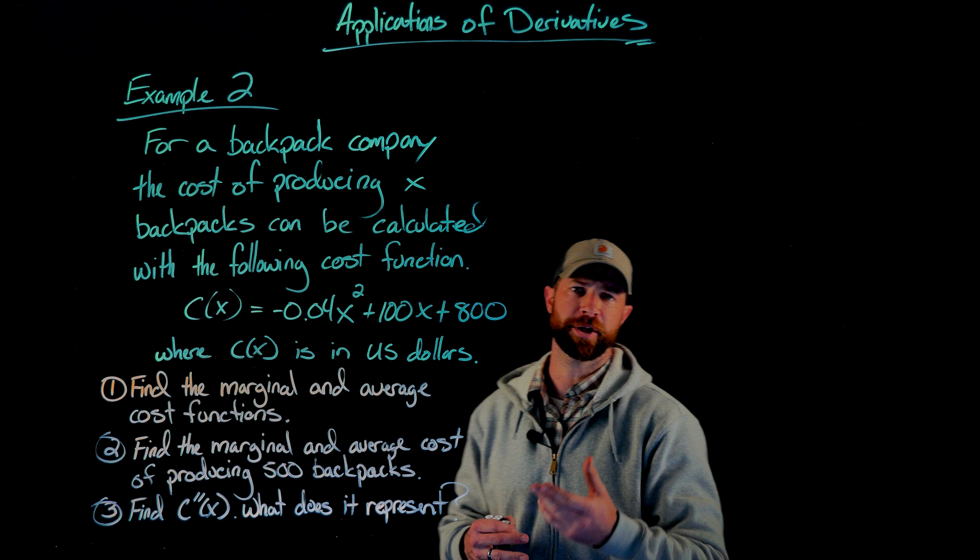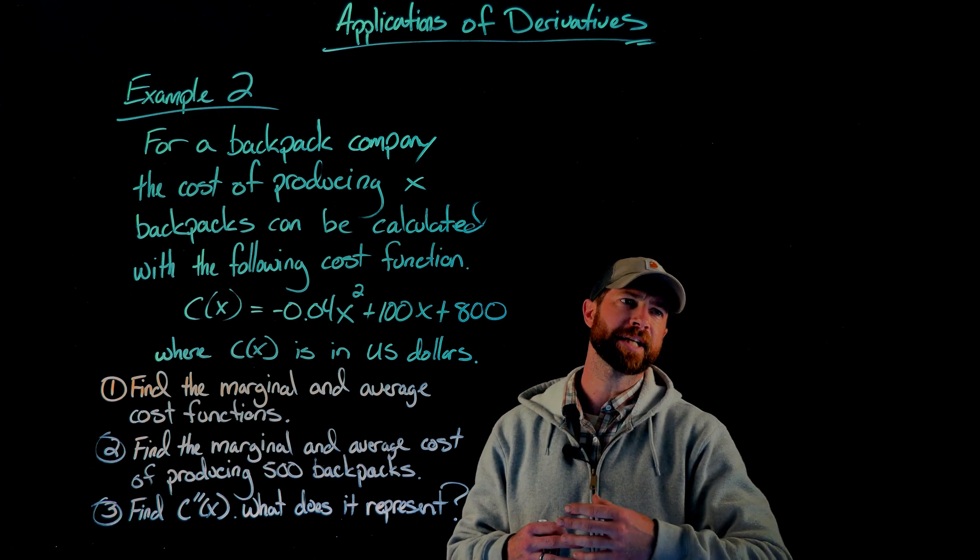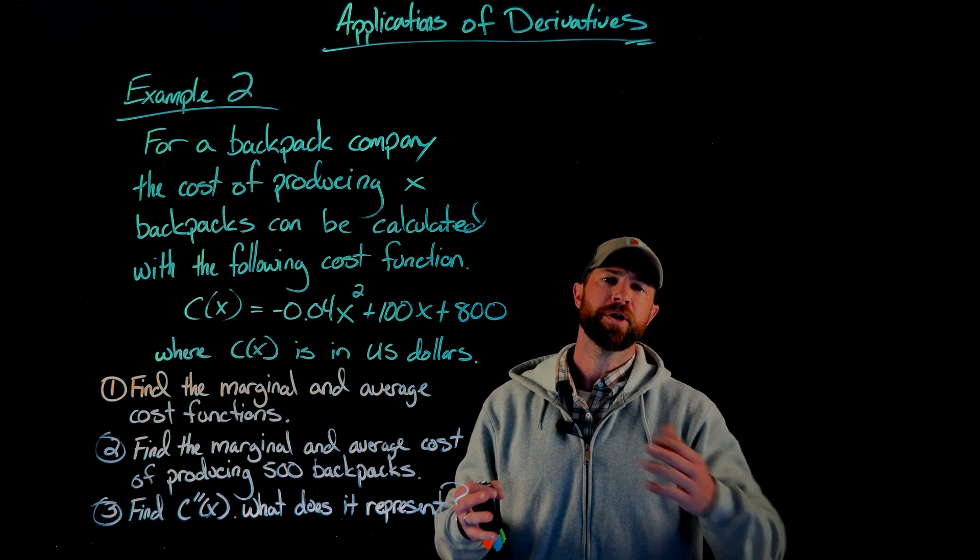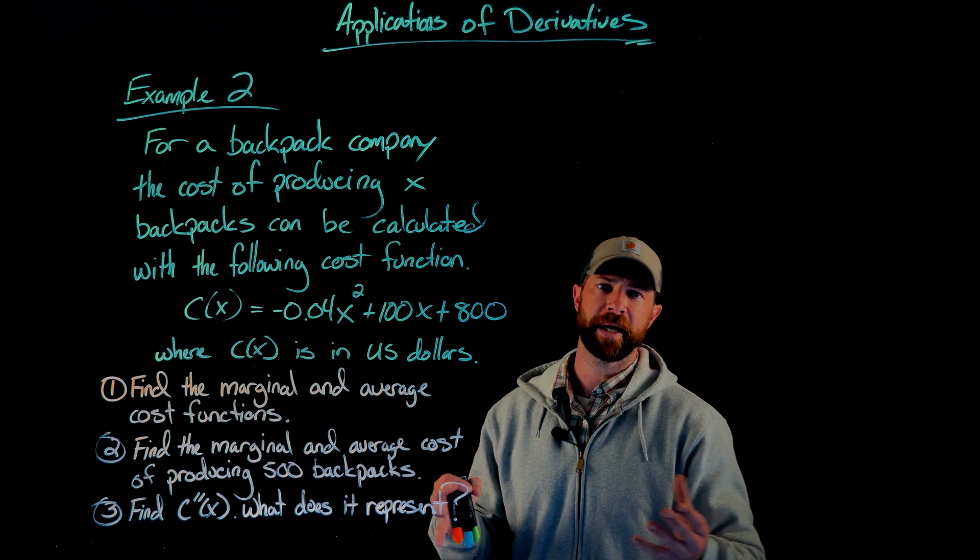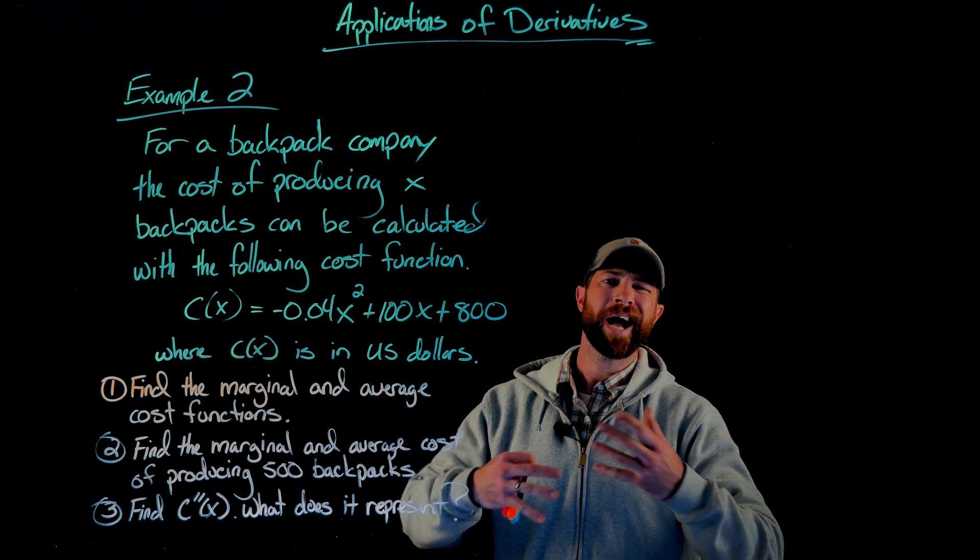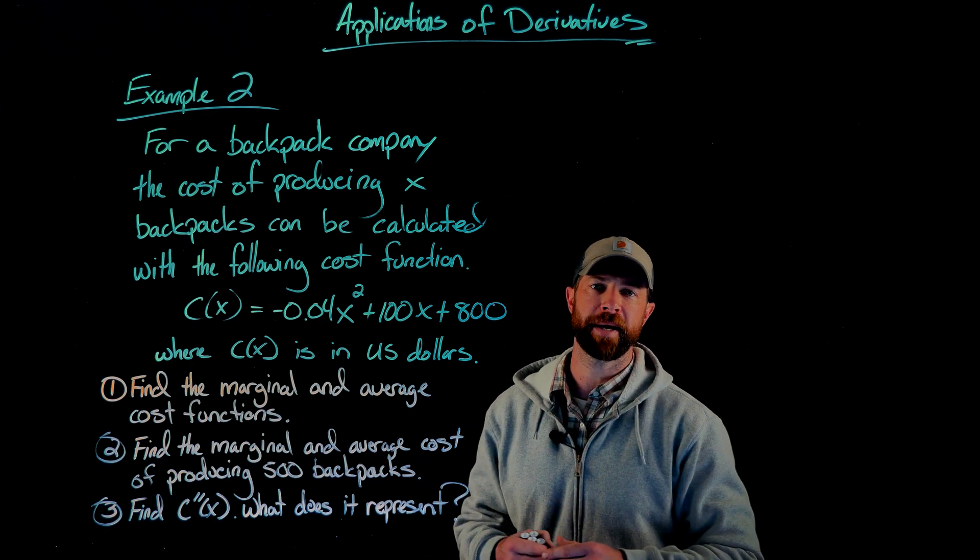The average cost function instead does this: if you create 100 backpacks, you're going to take the cost, divide it by 100, and then we'll tell you how much it costs on average to make those backpacks.